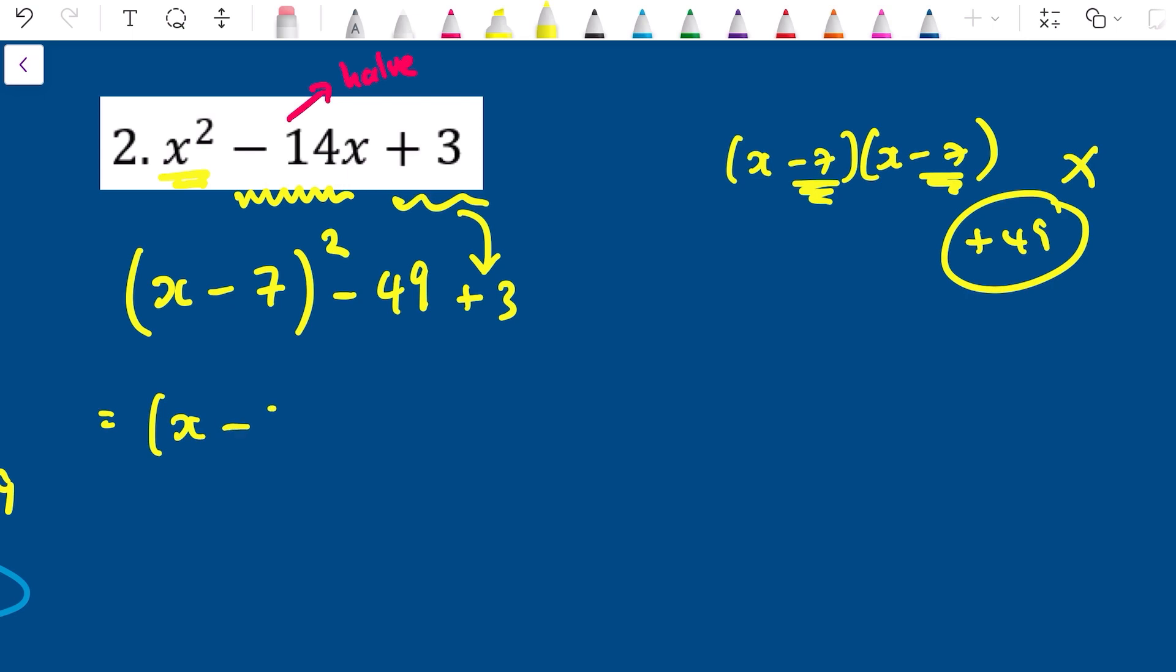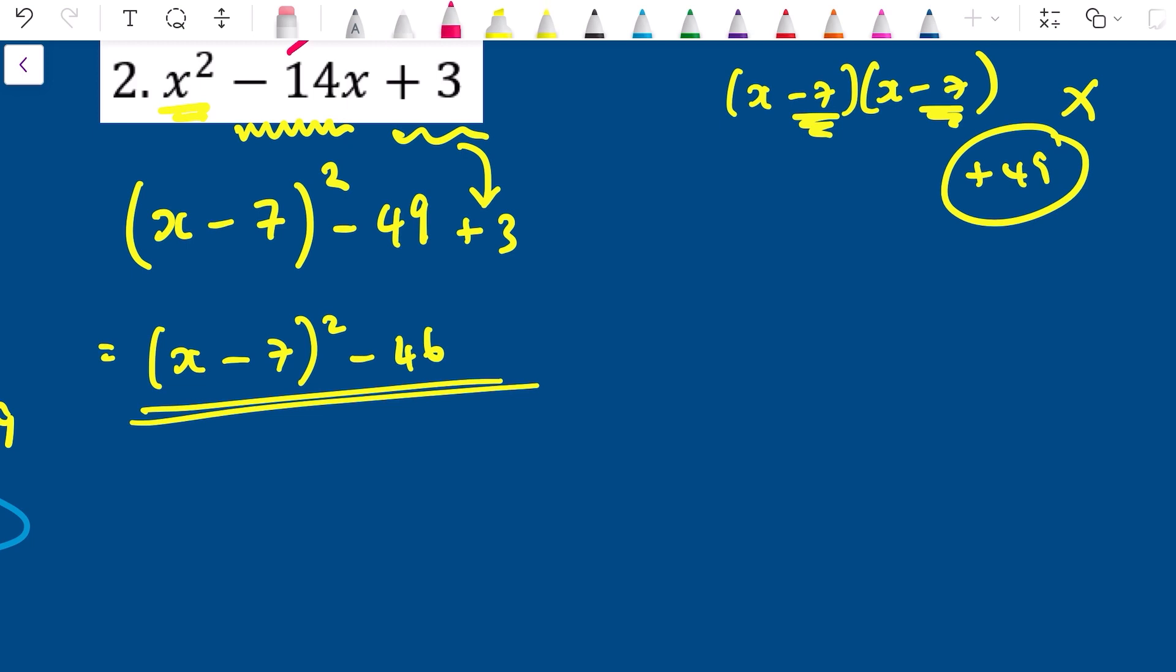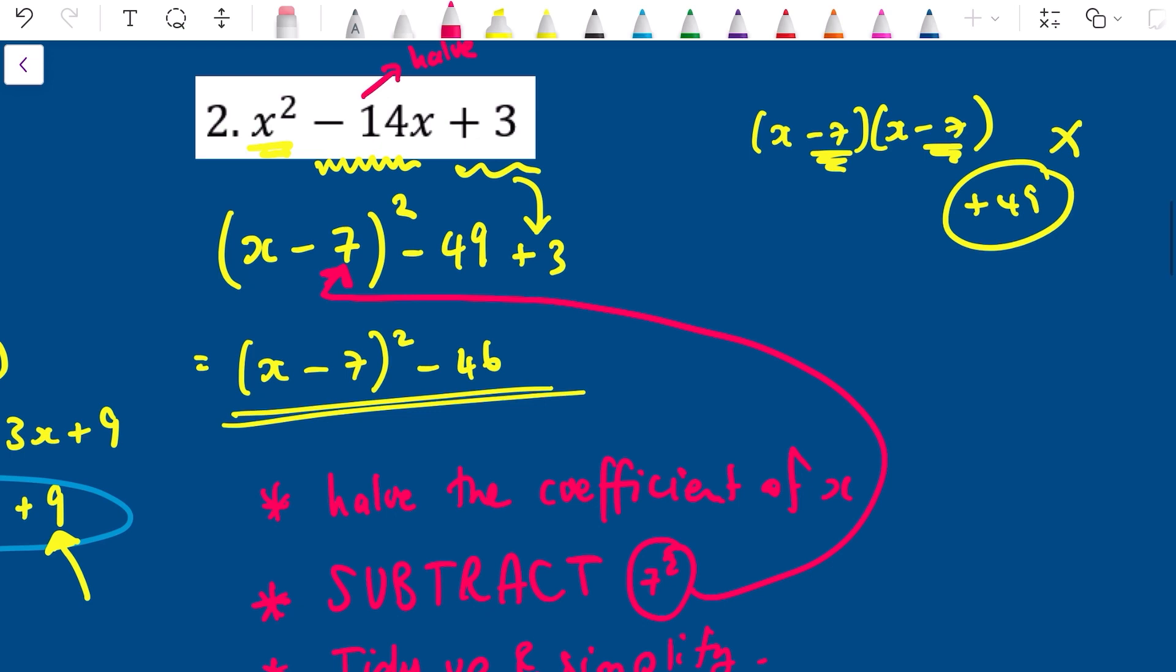Okay, tidy this up so I get (x - 7)² and -49 + 3 is -46. I am done. I have completed the square. Okay, I'm going to just make a quick summary. I halve the coefficient of x, that's step one. Step two is I subtract this end term, this bit, just the 7 not the minus 7, just the 7. Subtract 7². And then my third step is I tidy up and simplify. Okay, hopefully that all makes sense. Again really useful to complete the square for finding turning points but we'll look at that in another lesson.